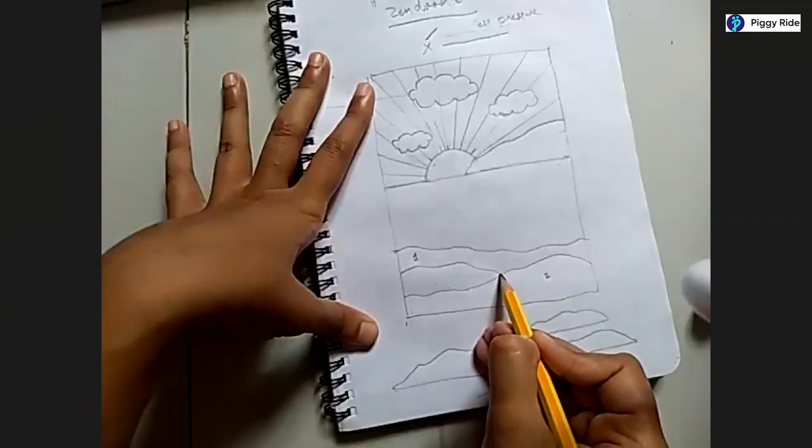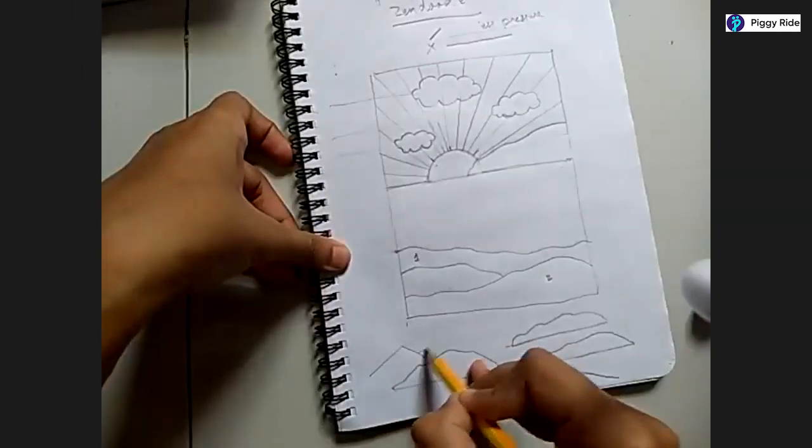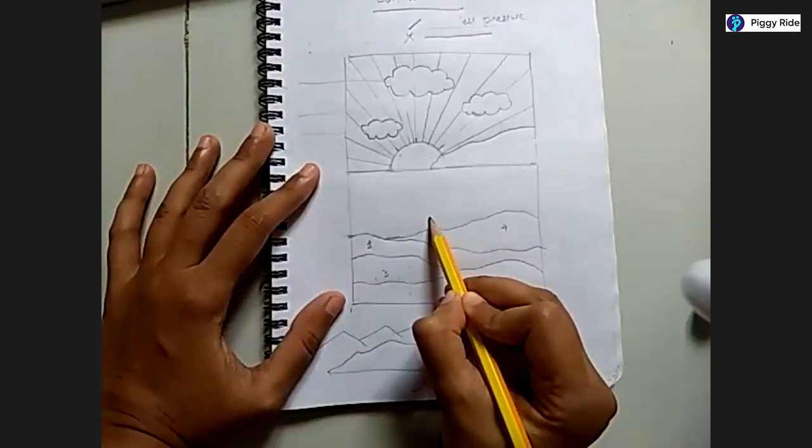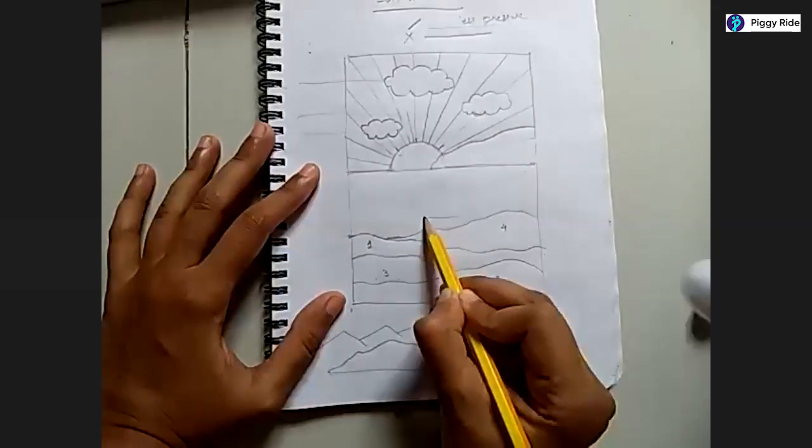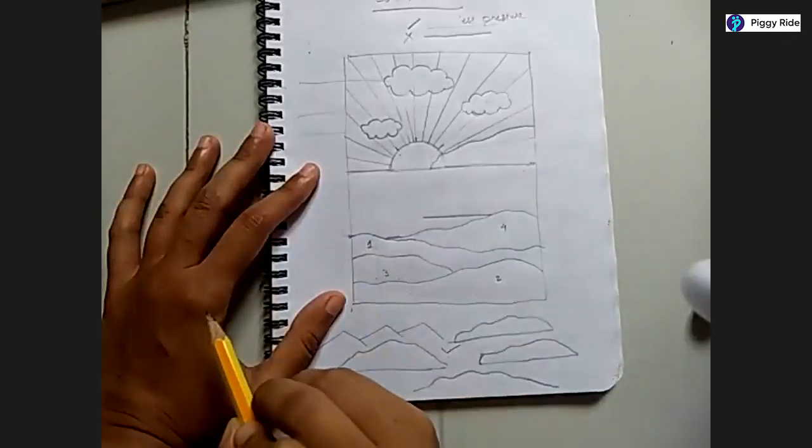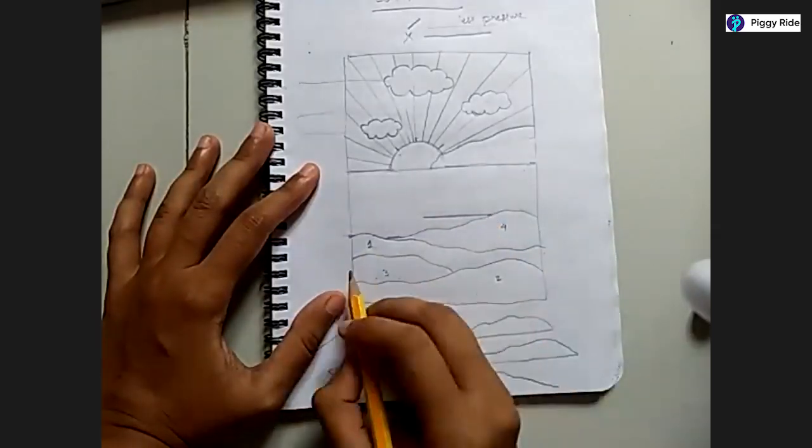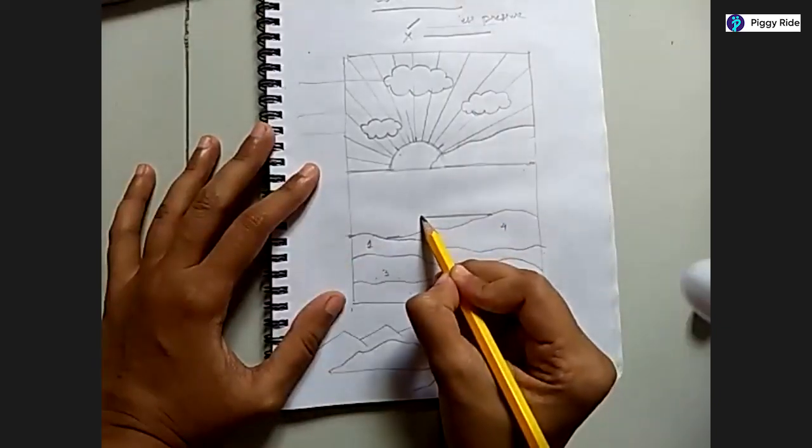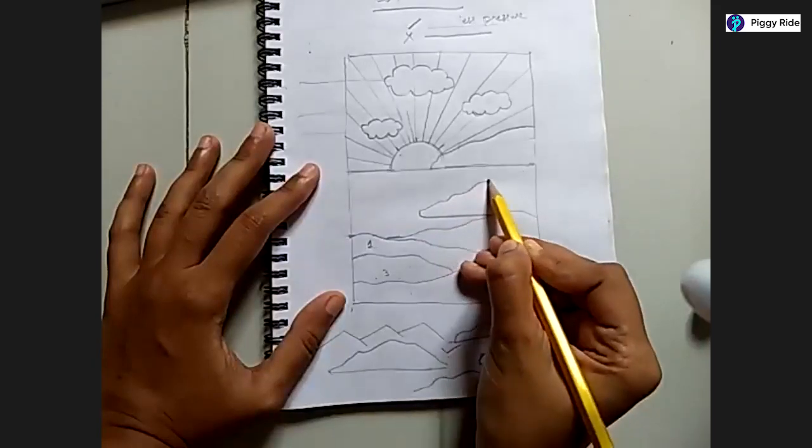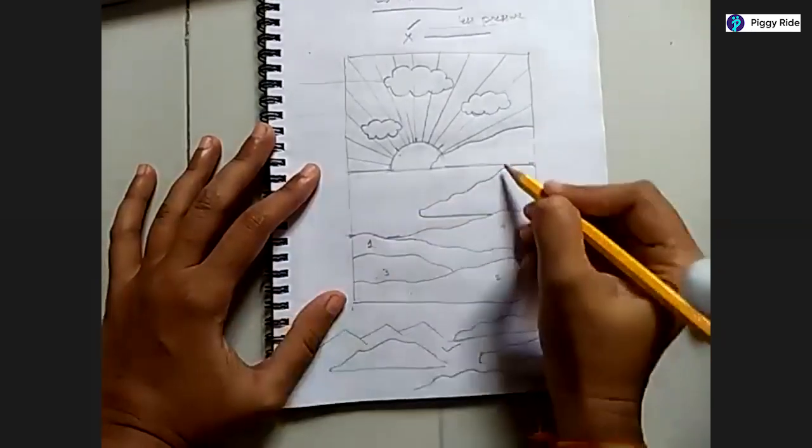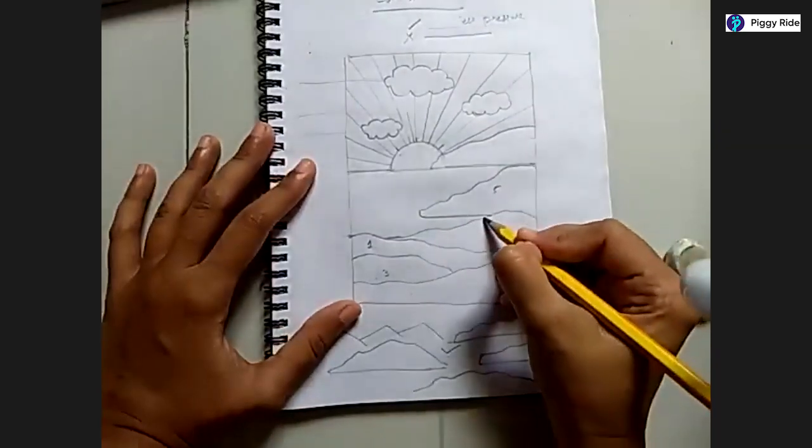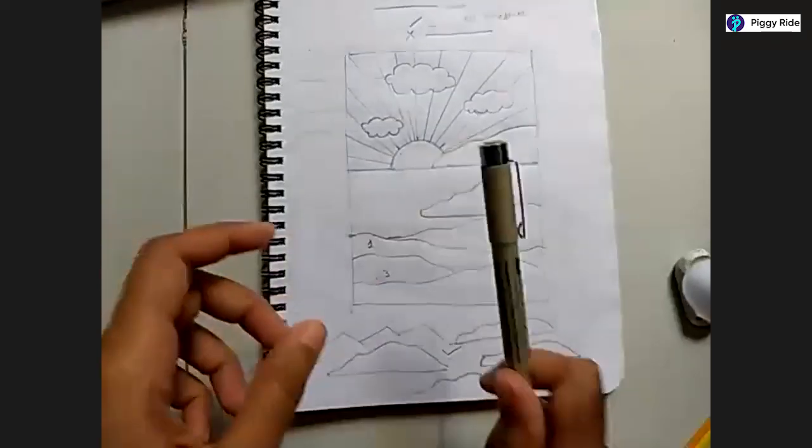I am going to start making one more mountain at the bottom. The outer edge of the mountains, the lines, we are not going to use this for today's artwork. Now the fifth mountain is going to have its base also visible, so I'm going to draw a straight line next to the fourth mountain and then from here I am going to start making the surface for our fifth mountain.